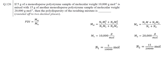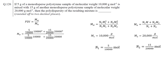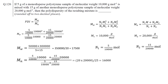Now we have both number and weight average molecular weight, so we can simply put these numbers into the formula and calculate both values. Finally, by taking the ratio, we can find the polydispersity index, which is 1.09.